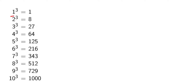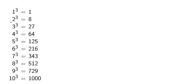Looking at some cubes: cube of 1 has unit place 1, cube of 4 has unit place 4, cube of 5 has unit place 5, cube of 6 has unit place 6, cube of 9 has unit place 9, and cube of 10 has unit place 0. Observe that for numbers 1, 4, 5, 6, 9, and 10, the unit place of the cube is the same as the original unit digit.